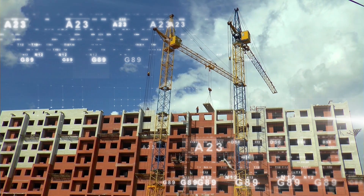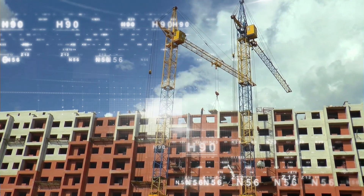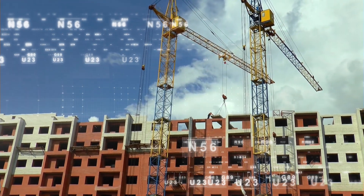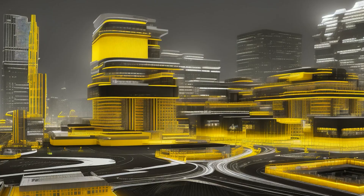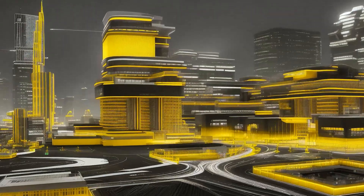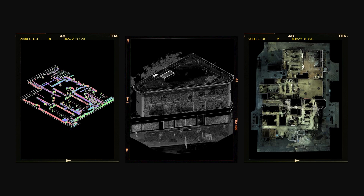In the scan planning stage, the scan locations and parameters are planned to ensure comprehensive coverage of the entire site or building. The scanning stage involves 3D laser scanners capturing a high-density point cloud of the physical space. These scanners emit laser beams that bounce off surfaces and return as points, and these data points form the basis of a point cloud, which represents the virtual replica of the scanned space.